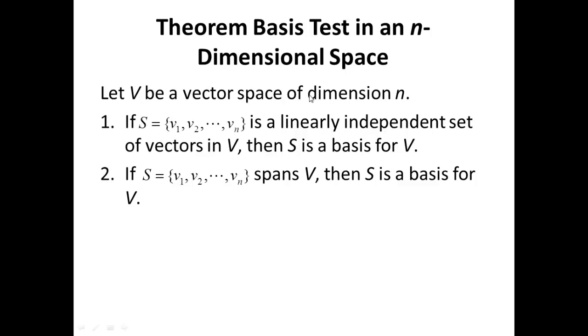So the first statement, if V is a vector space of dimension n, number 1. If S is the set defined by the n vectors, V1, V2, Vn. If this set is linearly independent, we stop right there and conclude that S is a basis for V. We do not have to verify that it spans V.